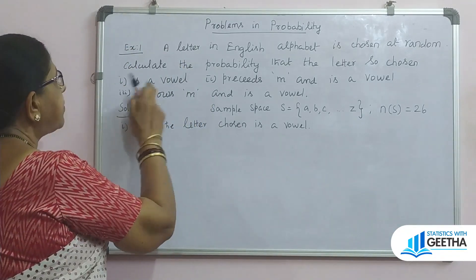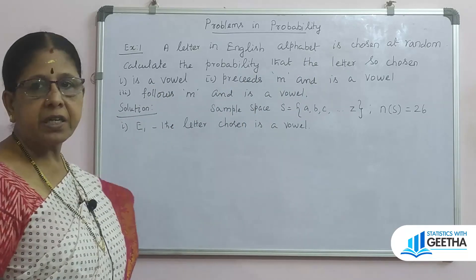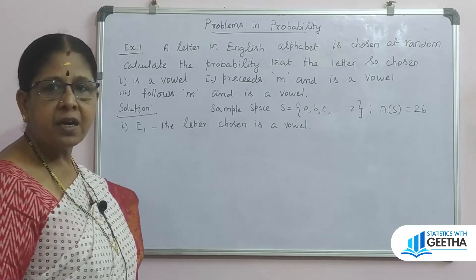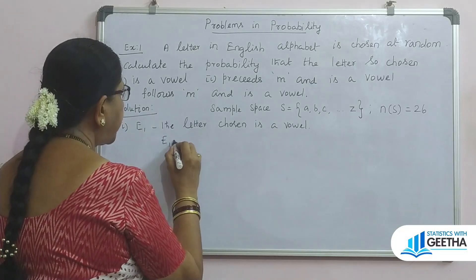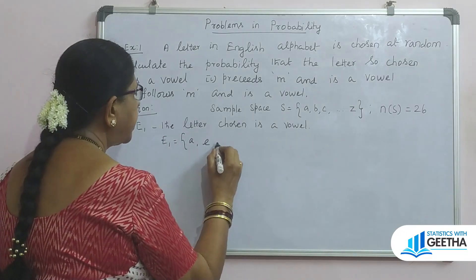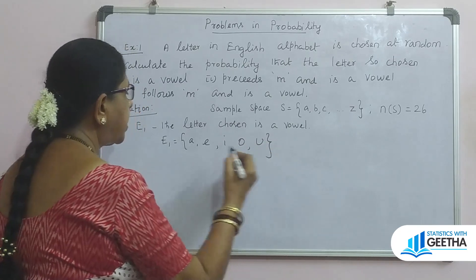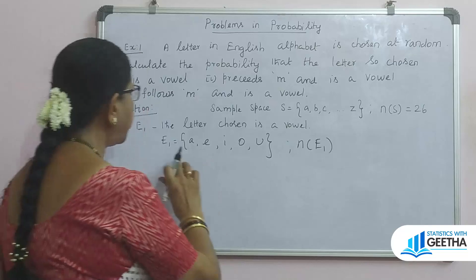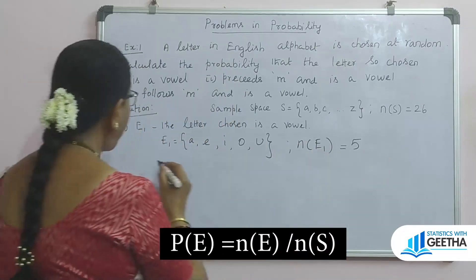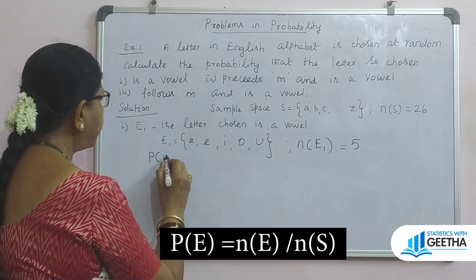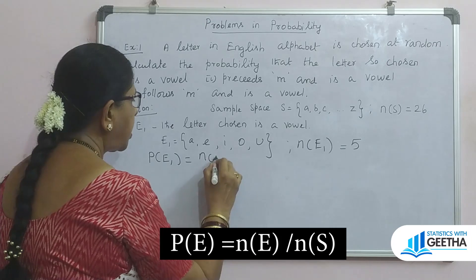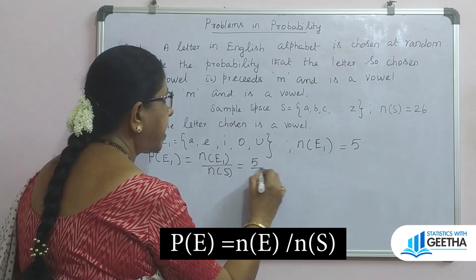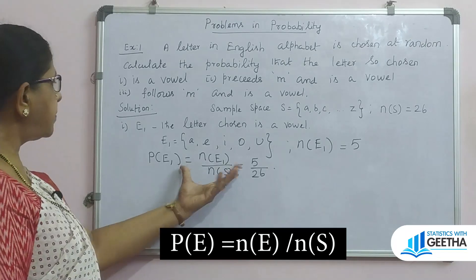For the first subdivision, let E1 be the event that the letter chosen is a vowel. The vowels are A, E, I, O, U. So the number of favorable events, N of E1, is 5. Therefore, the probability of E1 equals N of E1 divided by N of S, which is 5 divided by 26.